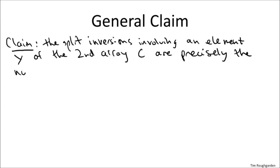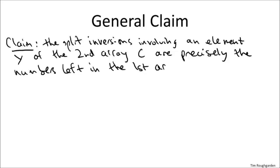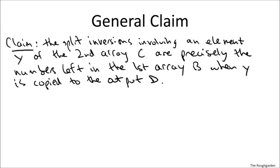On the right array C we had elements 2, 4, and 6. Every split inversion by definition involves one element from the first half and one from the second half. Grouping split inversions by which element of the second array they involve: element 2 is involved in inversions (3,2) and (5,2) — 3 and 5 were exactly the elements remaining in B when we copied over 2. The split inversion involving 4 is exactly (5,4) — 5 was exactly the element remaining in B when we copied over 4. There are no split inversions involving 6, and indeed B was empty when we copied 6 into the output array D.